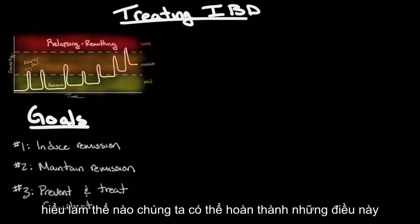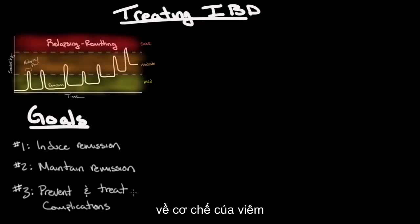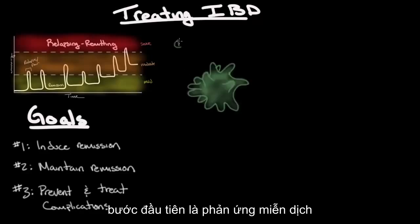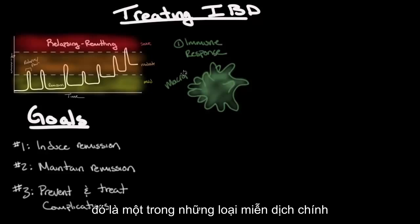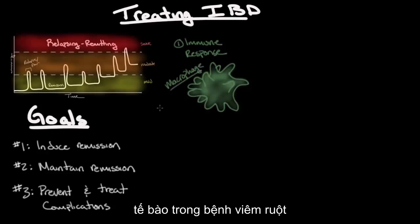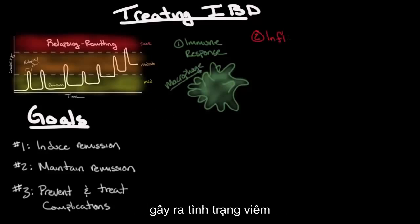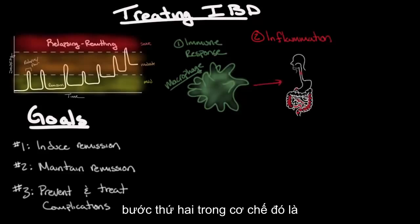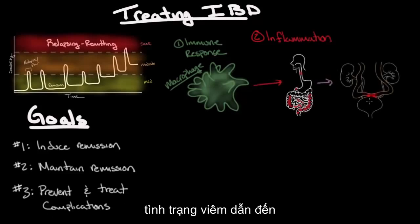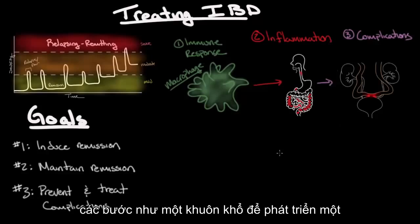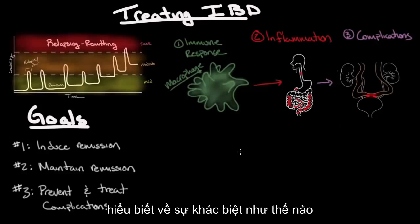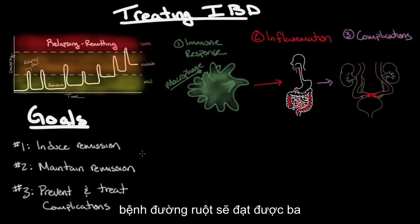To understand how we can accomplish these goals, it's helpful to think about the mechanism of inflammatory bowel disease as having three steps. The first step is the immune response — this is a drawing of a macrophage, one of the main types of immune cells in IBD — which causes the inflammation, the second step. Then it's the inflammation that results in the complications. We can use these three steps as a framework to understand how different medications achieve these three treatment goals.